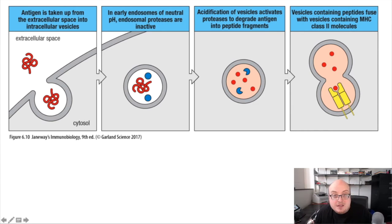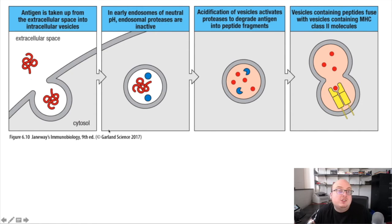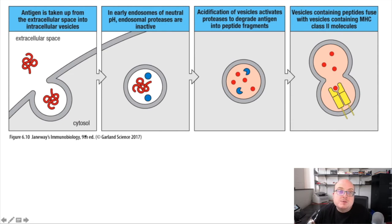Macropinocytosis, if we're talking about a dendritic cell — all sorts of ways for things to come into the cell. But the idea is that they come in through membrane-bound vesicular structures that we can collectively refer to as endosomes.